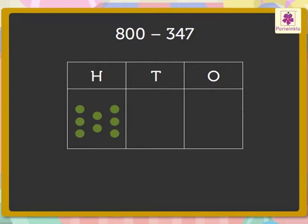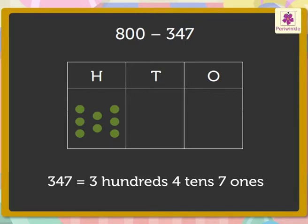Now let us cancel the dots equal to the digit in the subtrahend in each column, starting with the dots in the ones column first, then the dots in the tens column, and lastly the dots in the hundreds column. Now there are seven ones in 347, so we need to cancel seven blue dots, but we cannot cancel seven blue dots from zero blue dots.